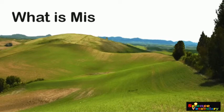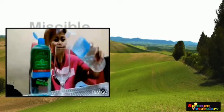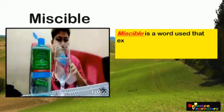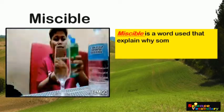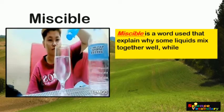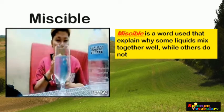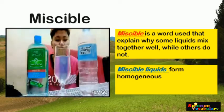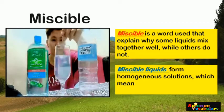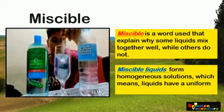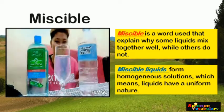What is miscible? Miscible is a word used that explains why some liquids mix together well, while others do not. Miscible liquids form homogeneous solutions, which means liquids have a uniform nature.